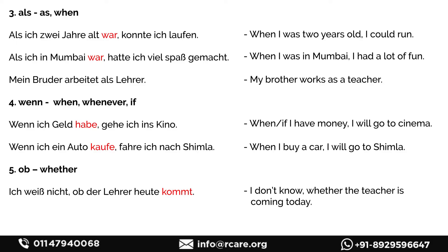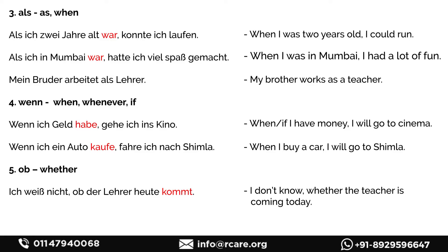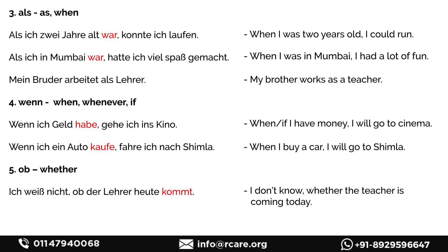Now 'als' — meaning 'as' or 'when.' The conjunction 'als' has two different meanings. 'Als ich zwei Jahre alt war, konnte ich nicht laufen' — when I was two years old I could not run. 'Als ich in Mumbai war, hatte ich viel Spaß' — when I was in Mumbai I had a lot of fun. 'Mein Bruder arbeitet als Lehrer' — my brother works as a teacher.